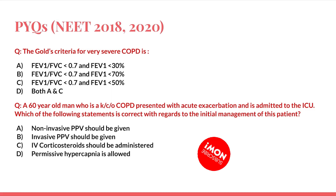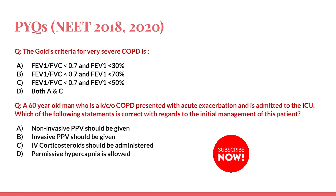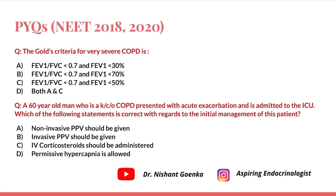The first question: the GOLD criteria for very severe COPD is — option A: FEV1/FVC less than 0.7 and FEV1 less than 30%; option B: FEV1 less than 70%; option C: FEV1 less than 50%; option D: both A and C.